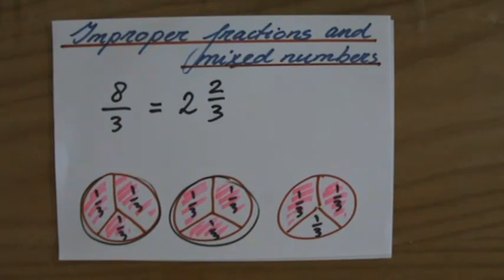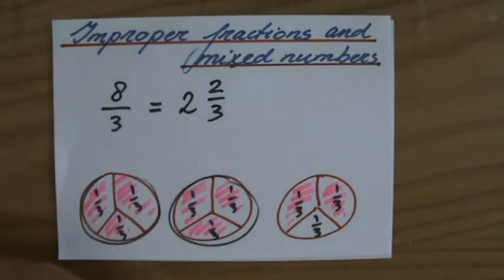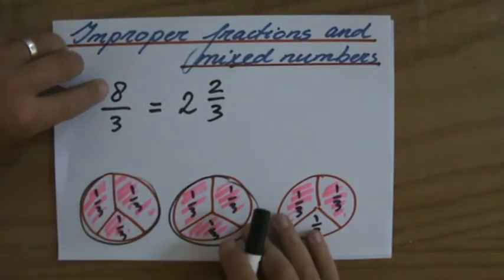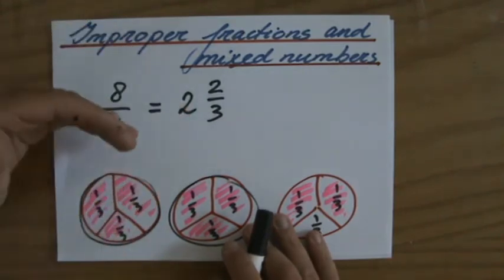Now, how can you calculate that without having to draw pizzas all the time? Well, you can have a look at 3. How many times does that fit into 8? Because it is 8 divided by 3. So how many whole times does 3 fit into 8?